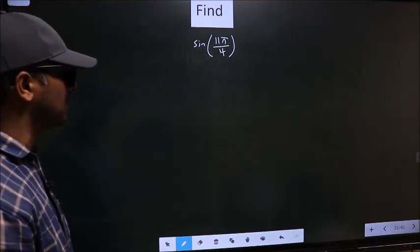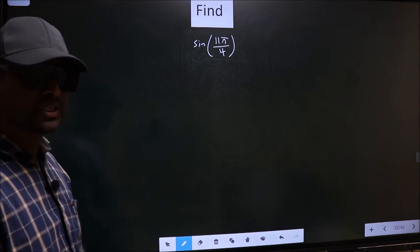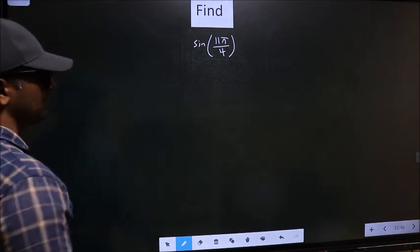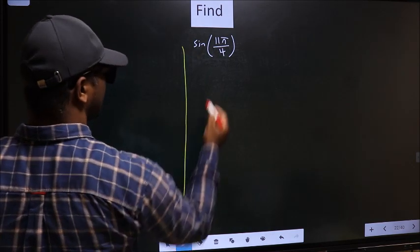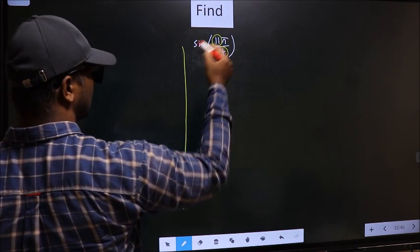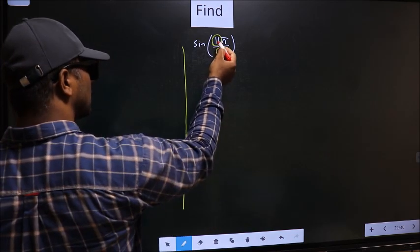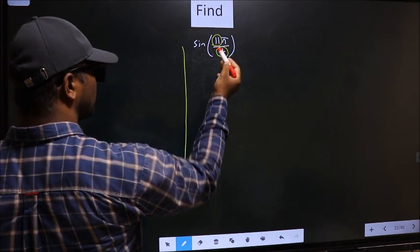Find sine 11π by 4. To find this, we should follow this method. See, in the denominator we have 4, in the numerator we have 11. Now you should check, 11 is close to which multiple of 4?